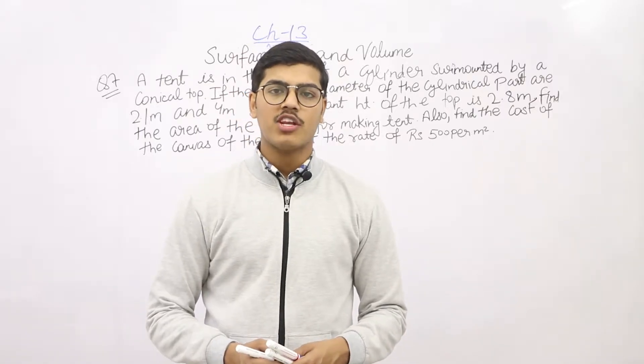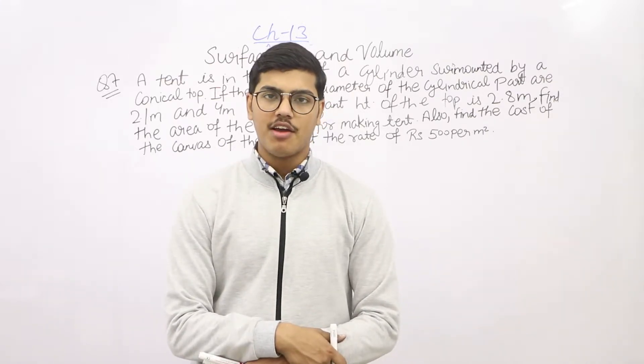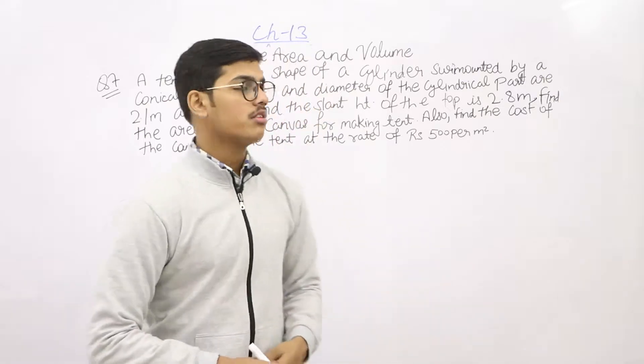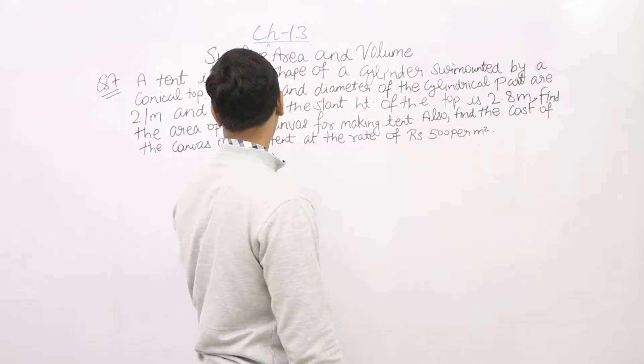Hello guys, welcome to all of you on our channel All Schools Colleges. I am starting with question number 7. Let's start. Question number 7 is: A tent is in the shape of a cylinder surmounted by a conical top.